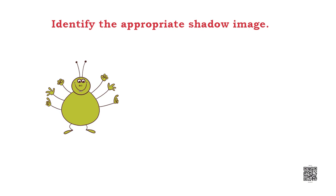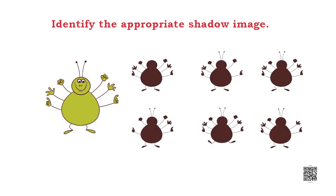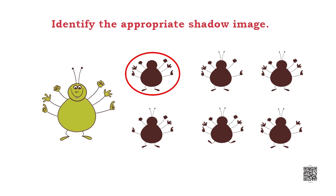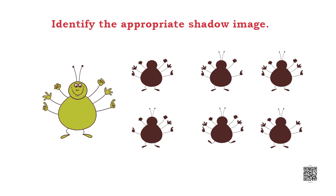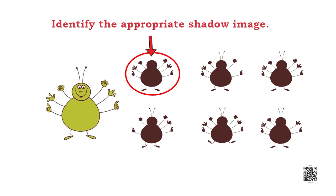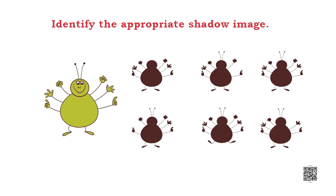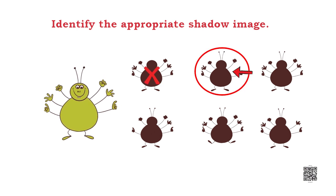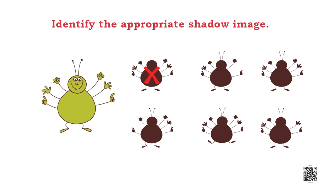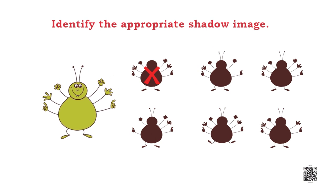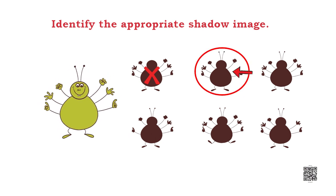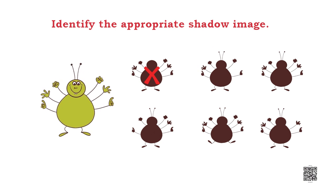Identify the picture given here. Here is a picture of a bee. Look at it carefully and then also look at the shadow pictures to see which picture matches the shape of this bee. In the first picture, the bee has all the hands, body and legs but there is no antenna, so this picture is wrong. The second one has antenna, body and legs but all three hands are on the left side and one hand is missing on the right side, so this picture is also wrong.